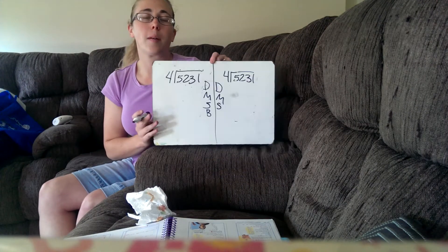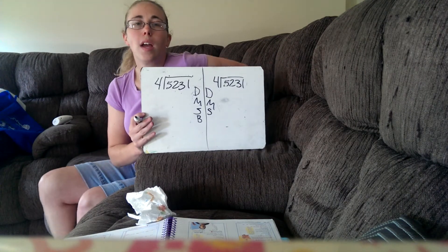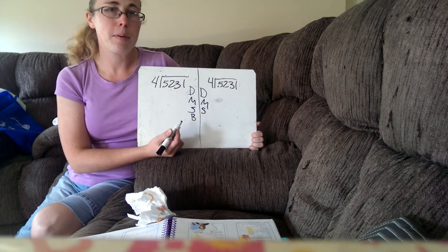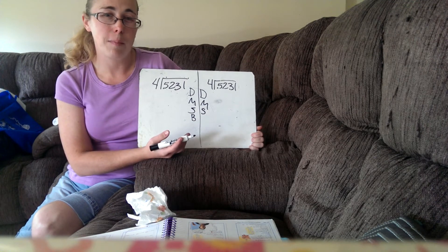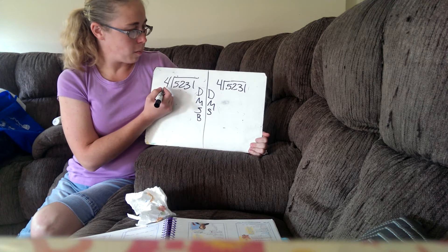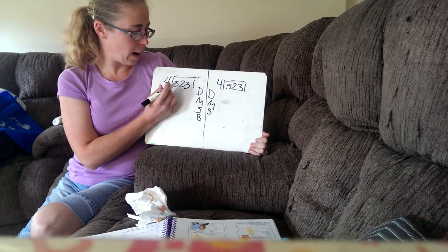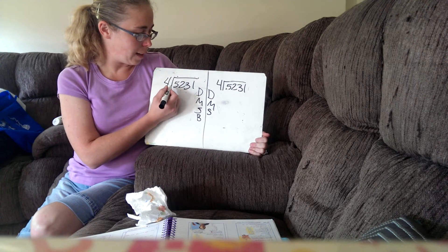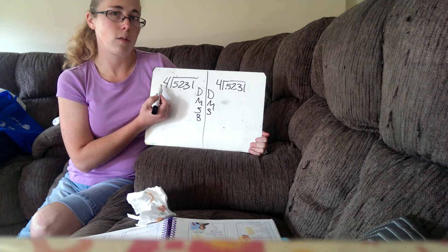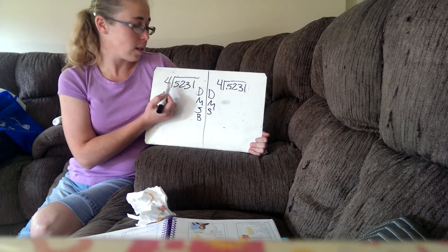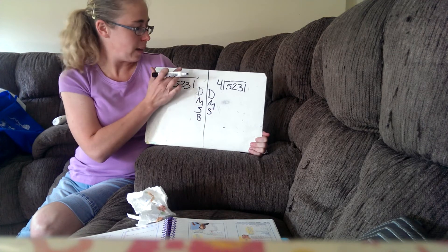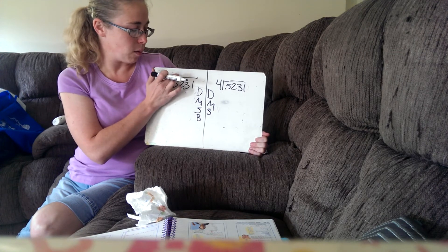This time we're going to talk about what to do if, when you get done subtracting at the S step, there's not enough to keep going. So remember, when you first start dividing, you look at the first number and see: can you take this number and break it into four groups? Yes, you can. If you couldn't, then you would put an X there to save that place.